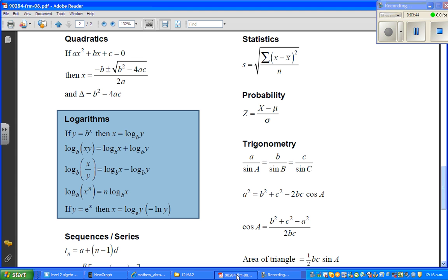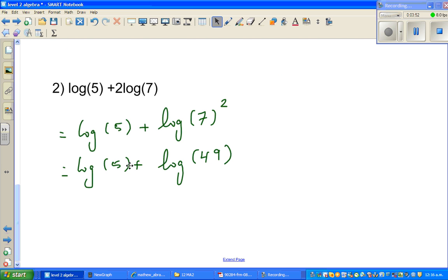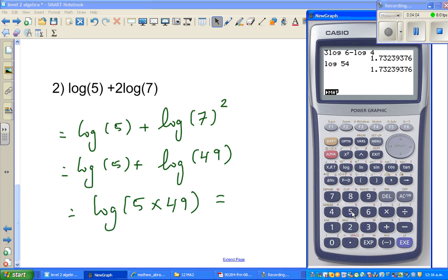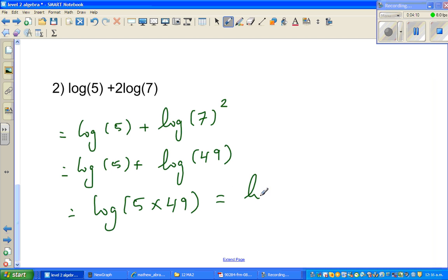So, again, going back to the formula sheet. Log of x plus log of y is log of x times y. So, applying that rule, log of 5 plus log of 49 would be log of 5 times 49. Which is, of course, I need a calculator. 5 times 49 is 245. So, that is log of 245.